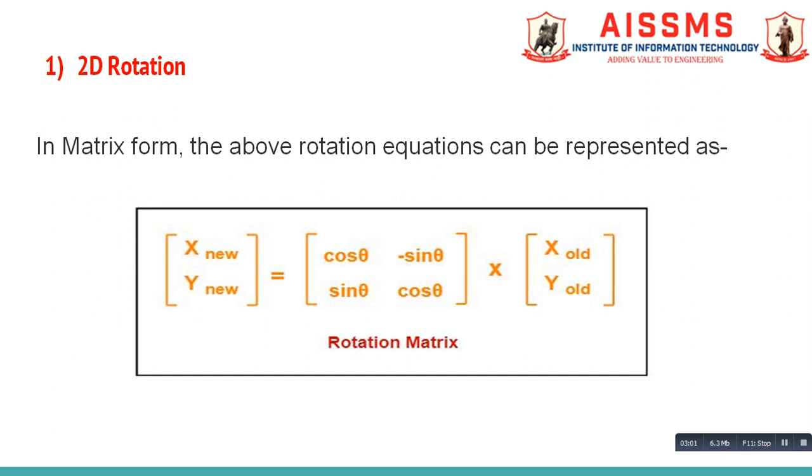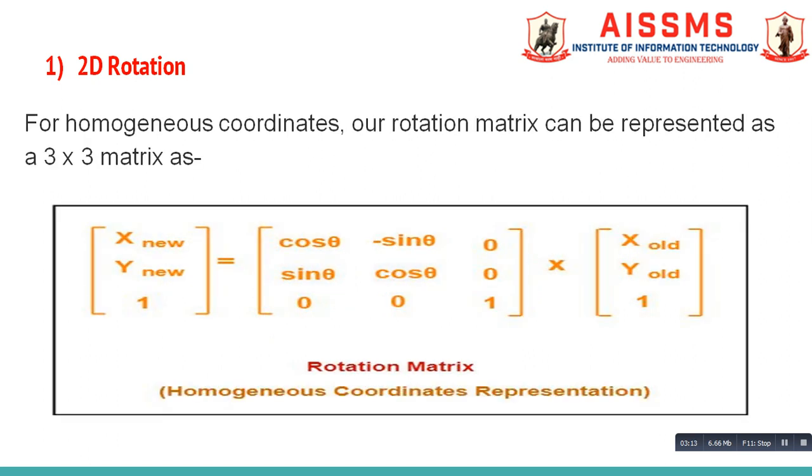In matrix form, the above rotation equation can be represented as follows, and it is known as rotation matrix. For homogeneous coordinates, our rotation matrix can be represented as 3x3 matrix as follows, and it is known as homogeneous coordinates representation of rotation matrix.